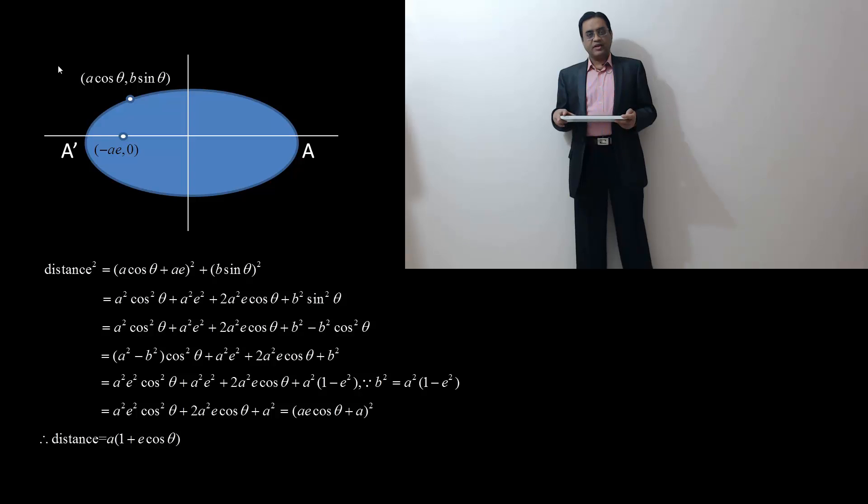Using conservation of angular momentum, it can be shown that when distance is maximum, speed will be minimum, and that will happen at point A. Likewise, when distance is minimum, speed will be maximum, and that happens at point A'.